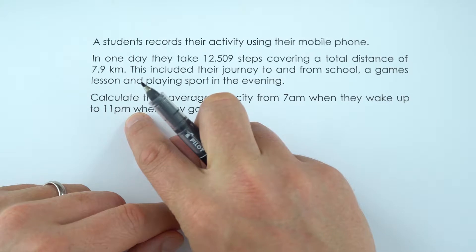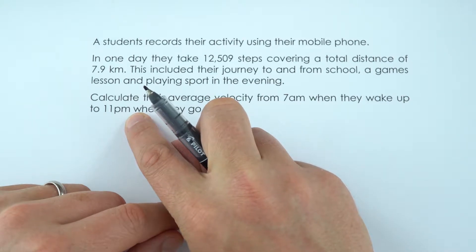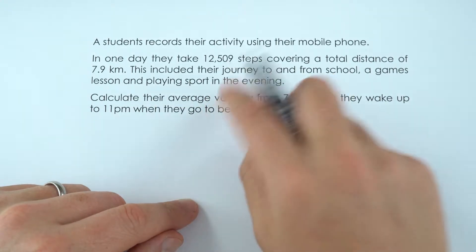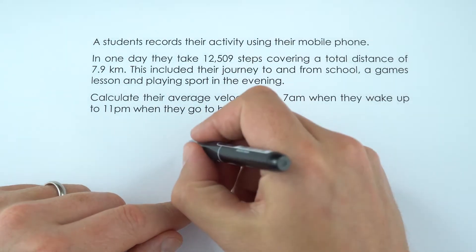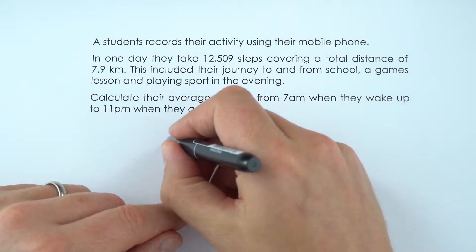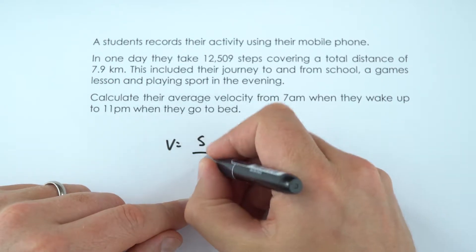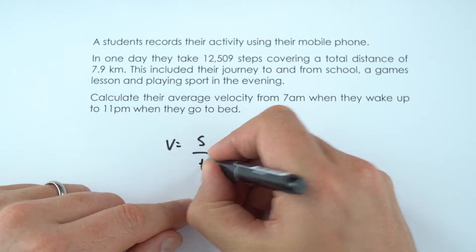So although this is given in hours, we may need to convert into seconds. And we need to work out their average velocity. The velocity is equal to the displacement divided by the time.